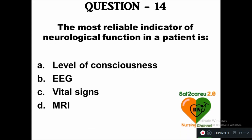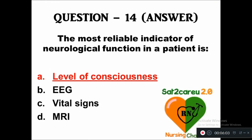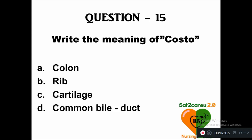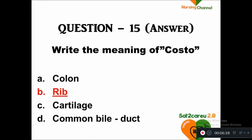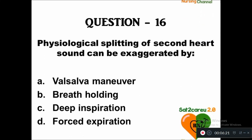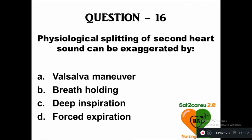The right answer is level of consciousness. Question 15: What is the meaning of 'costo'? — option A: colon, B: rib, C: cotylase, D: common bile duct. 'Costo' means rib.